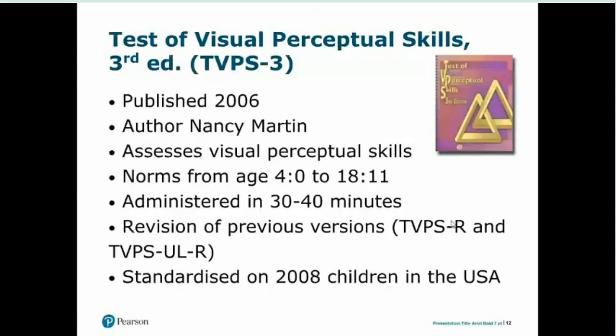Next is the Test of Visual Perceptual Skills, or TVPS3 — again a third edition. Published in 2006, it's seven years older than the DTVP3 and now 12 years old. The author is Nancy Martin, who is a psychologist. This is a purely visual perceptual test with no motor component. Norms go from age 4 to 18 years 11 months, covering primary and secondary ages. Administration takes about 30 to 40 minutes depending on child age and ability, with basal and ceiling rules.